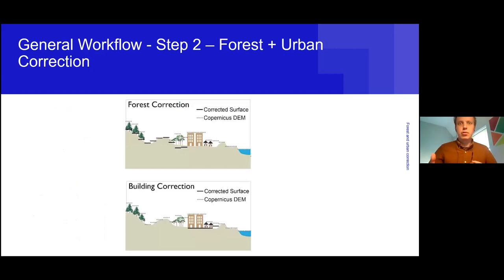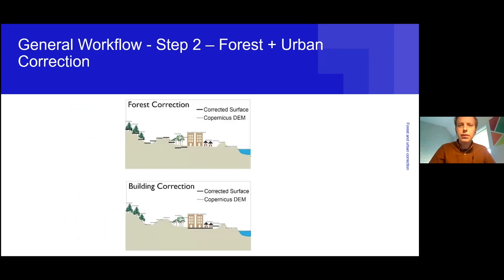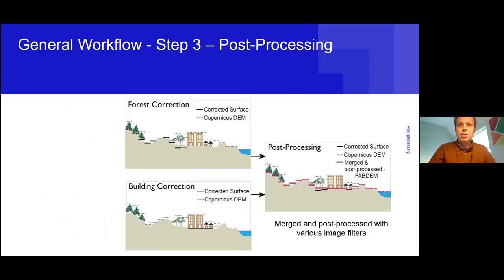In step two we performed the actual computation to create the DEM, correcting for forests and buildings. The dotted lines in the figures show the original Copernicus DEM and the solid lines show our corrections. In the third stage we post-processed by taking the minimum height from both forest and building corrections, applied various image filters, and produced the final result. Image processing is very important to fill in depressions or noisy pixels that may result from the machine learning over-correcting.